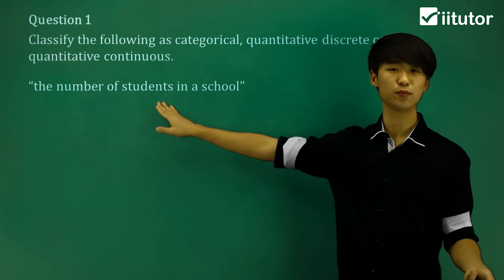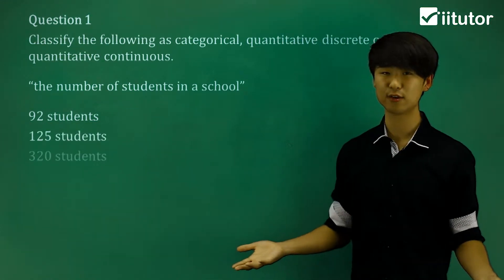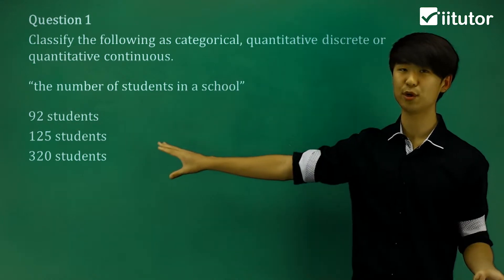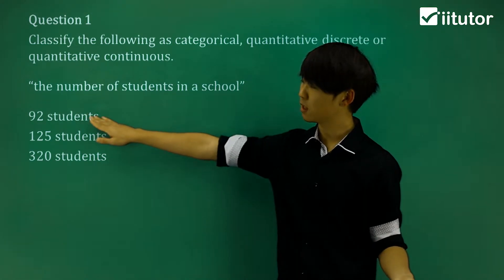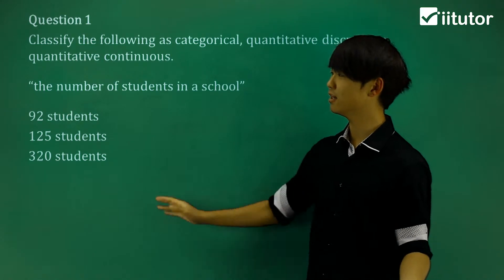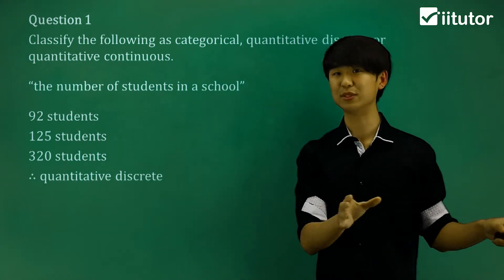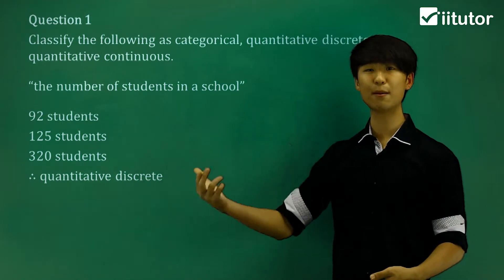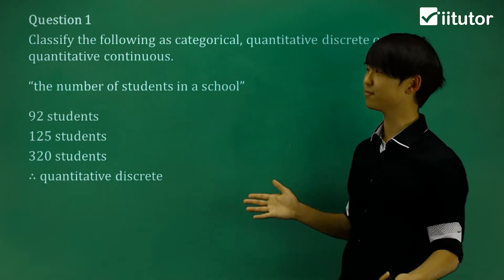The first situation is the number of students in a school. We can say, for example, 92 students, 125 students, or 320 students. We already know it's not going to be categorical because it has a numerical value, so it's either quantitative discrete or quantitative continuous. When we have values that are set whole numbers — like 92 students — we can't really have 92.5 students. In this situation, we call that a quantitative discrete variable. We have set specific values, like the number of apples on a tree: either two, three, or four apples — not 2.85 apples.